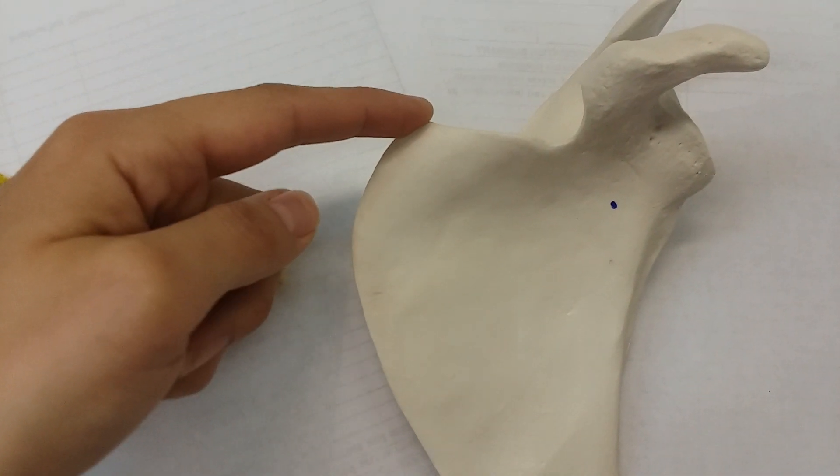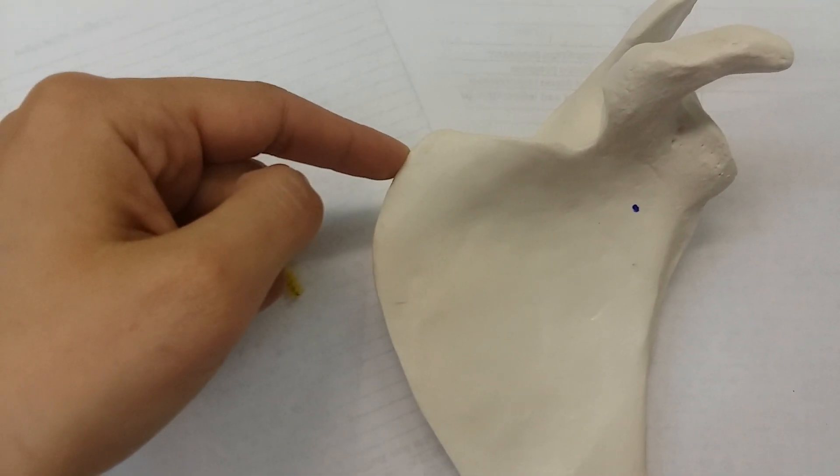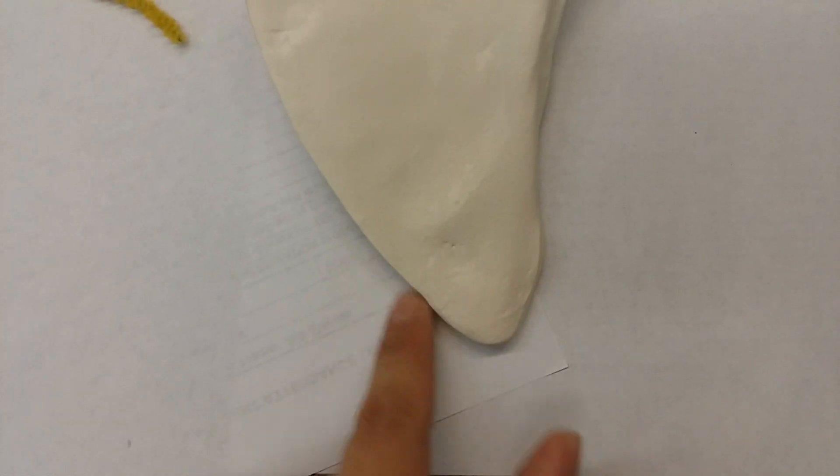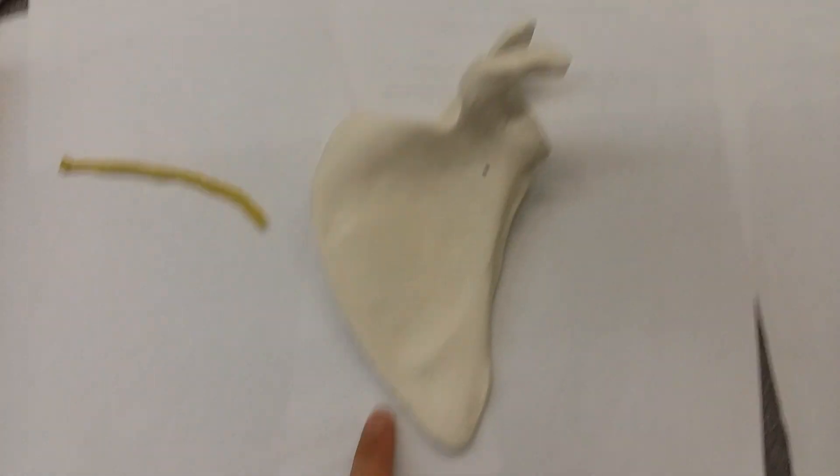And that is where you get a superior angle. From there, we're going to go to the inferior angle. The inferior angle is down here—this is where the lateral border meets the medial border.